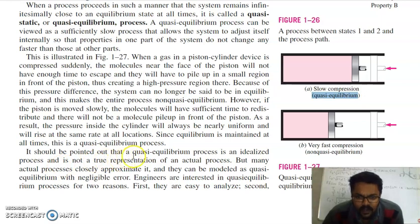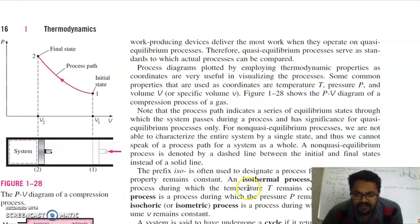It should be pointed out that a quasi-equilibrium process is an idealized process and not a true representation of actual processes. In actual cases, there is no quasi-equilibrium process. But we try to make the processes near to quasi-equilibrium process to obtain maximum efficiency and maximum output of the system. But many actual processes closely approximate it, and they can be modeled as quasi-equilibrium with negligible error. Engineers are interested in quasi-equilibrium processes for two reasons. First, they are easy to analyze. Second, work-producing devices will deliver the most work when they operate on quasi-equilibrium processes. Therefore, quasi-equilibrium processes serve as standards through which actual processes can be compared.